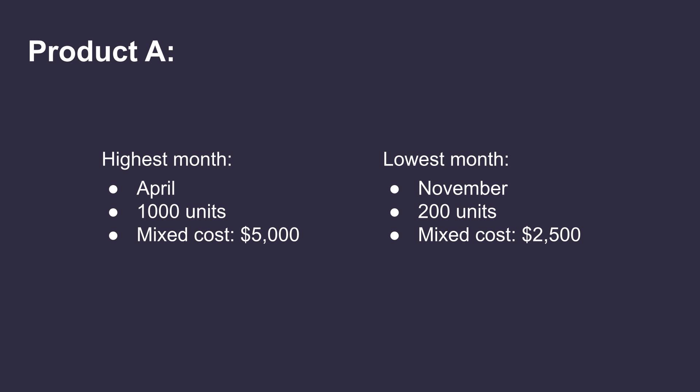Let me illustrate with an example. Let's assume that during the year we produce product A and we track every month's production activity. The highest level of activity for product A was the month of April. We produced 1,000 units at a total mixed cost of $5,000. The lowest level of activity was in the month of November, with the total units produced of 200 at a total mixed cost of $2,500.